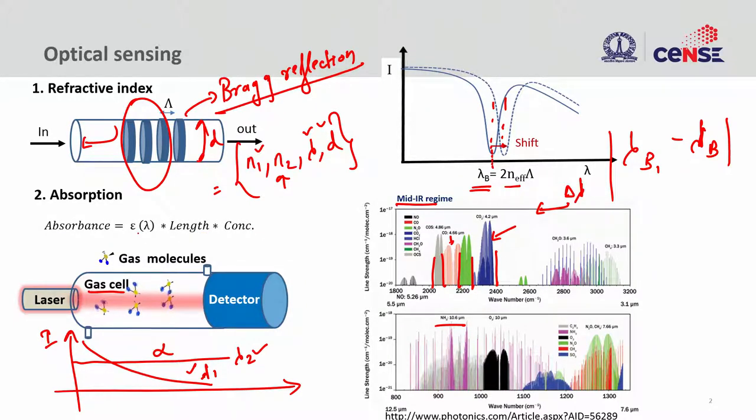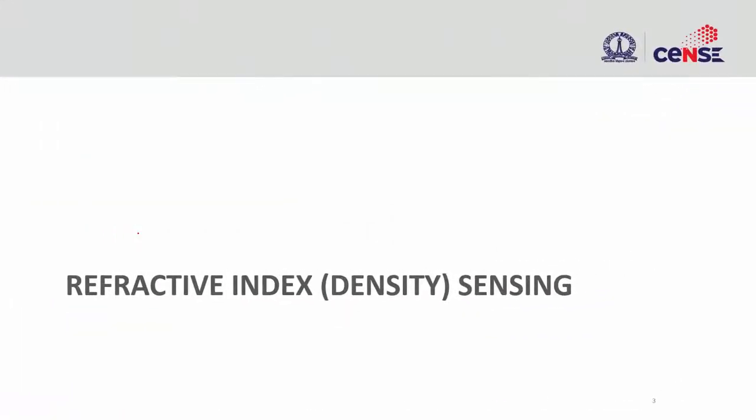Based on this, let us look at these two techniques. Refractive index sensing is primarily density sensing. You have light propagating through the waveguide and there is an environment you want to sense. When you say sense the environment, you want to sense how dense it is — whether it is tightly packed or loosely packed. The primary reason to understand density is to understand the concentration. When the concentration of constituents in a solvent increases, the density is going to increase. By understanding the environment, you can say what is the concentration of constituents present in the system.